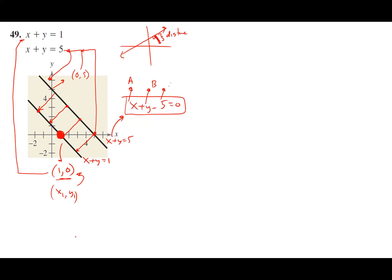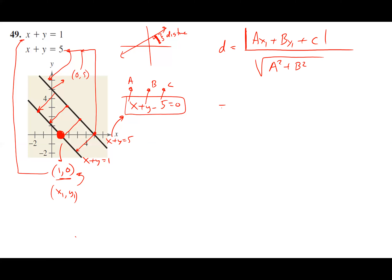So real quick here, what's my formula? Let's get going with the formula. The formula is the absolute value of a times x-one plus b times y-one plus c, all over the square root of a squared plus b squared. That's your two items here — that's the ratio between the two. So let's plug all this in.